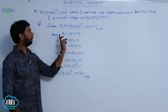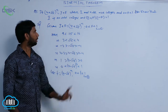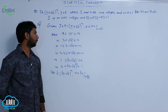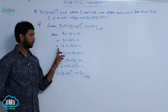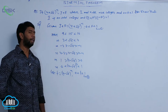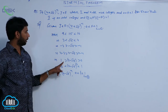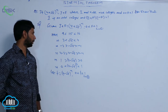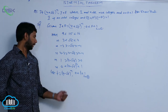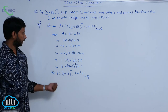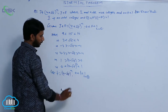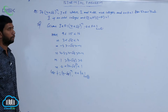Here √15 lies between 9 and 16, since 9 < 15 < 16. Apply square root: 3 < √15 < 4. Multiply with minus: -3 > -√15 > -4. Adding 4: 4 - 1 > 4 - √15 > 0. That is 0 < (4 - √15)^n < 1. Let f' = (4 - √15)^n, where 0 < f' < 1.